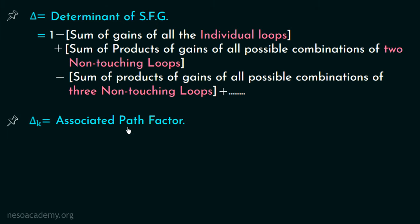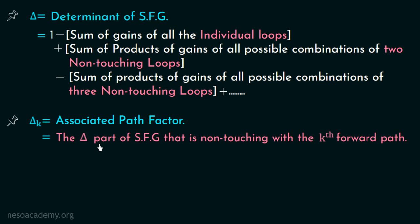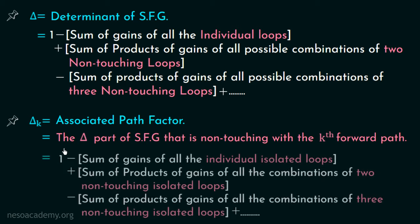Moving on to the associated path factor Δ_k, also called the delta part of the SFG that is non-touching with the kth forward path. The formula is: 1 minus sum of gains of all individual isolated loops, plus sum of products of gains of all combinations of two non-touching isolated loops, minus sum of products of gains of all combinations of three non-touching isolated loops, plus so on. Please take these two formulae in your notes — they will be clearer when we discuss examples.